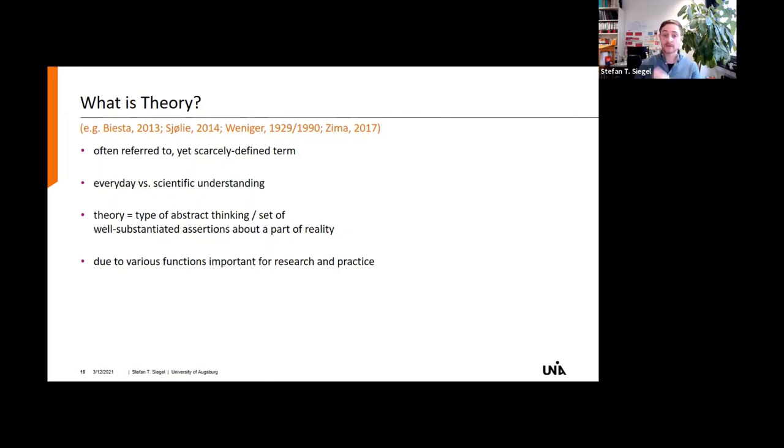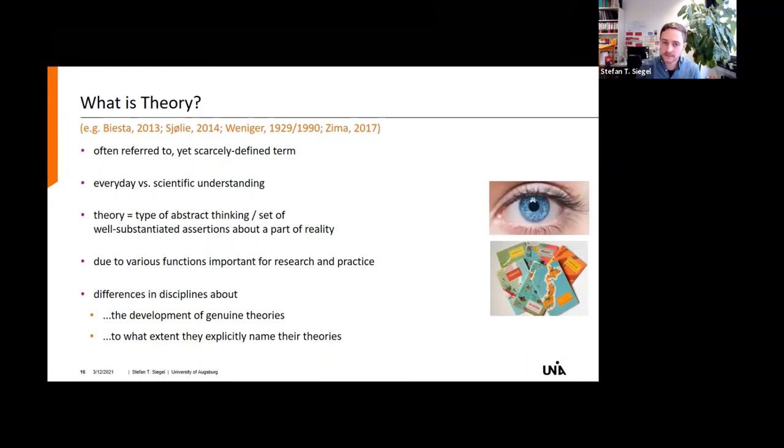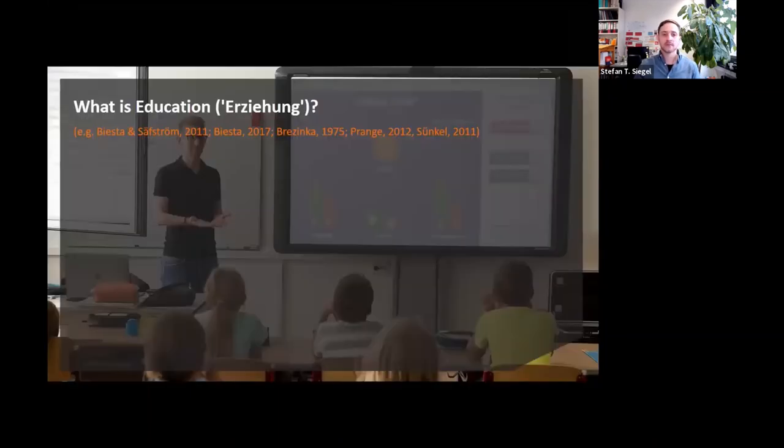There is no doubt that theories play an important role in research and practice. Theories fulfill various functions. They can be used, for instance, to describe, predict, understand, justify, analyze a certain phenomenon. Consequently, they can be considered very important for theory and research on the one hand and practice on the other hand. Yet there are differences in disciplines regarding to what extent they develop genuine theories and also to what extent they explicitly name their theories. I would say educational science is here quite weak, whereas, for instance, psychology is nowadays rather strong regarding these two points. What is education? Moving on to the next term.